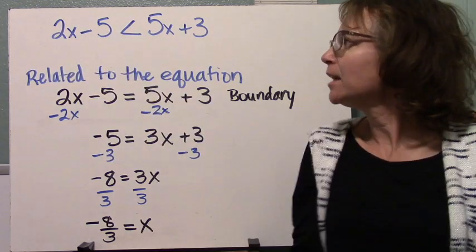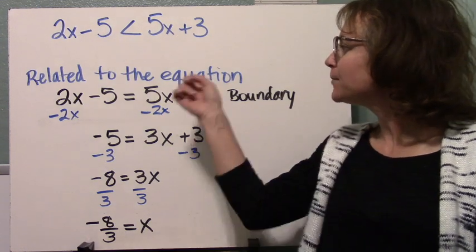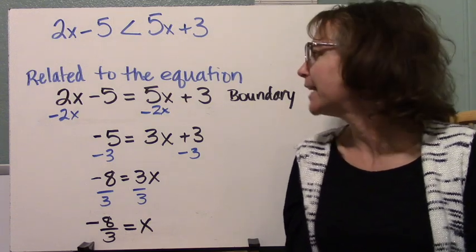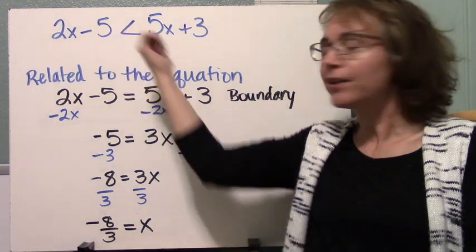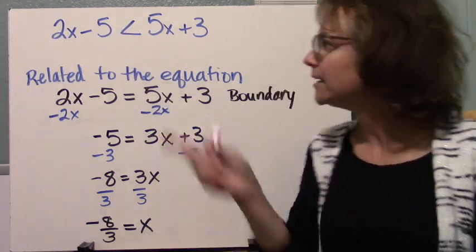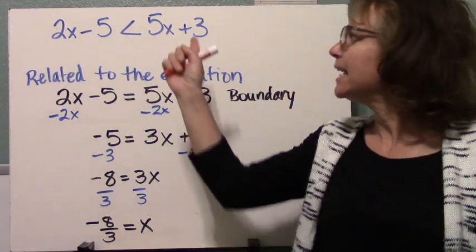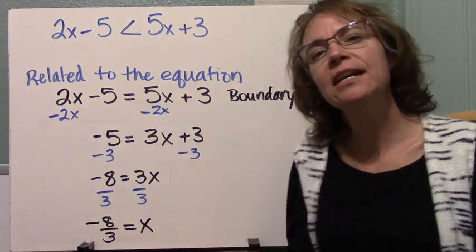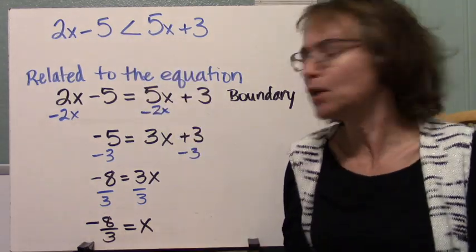So the inequality 2x minus 5 is less than 5x plus 3 is related to this equation 2x minus 5 is equal to 5x plus 3. That's going to give us our boundary. Now we know by looking at our inequality that the boundary is actually not going to be included, and that's because we don't have the or equal sign in our inequality. So this or equal to part is just going to give us the boundary, but it's not going to be part of the solution of this inequality.